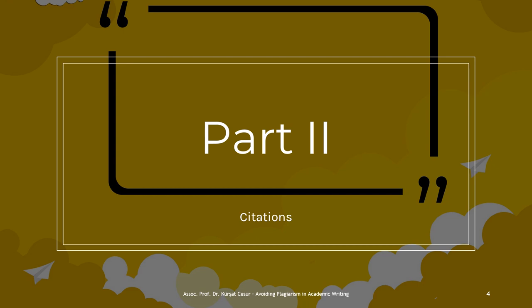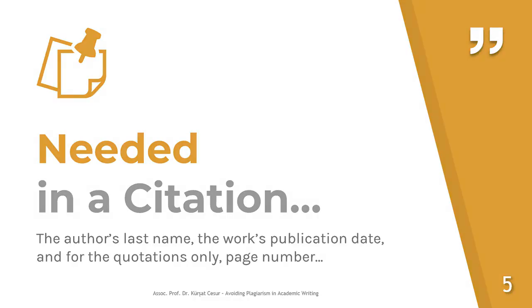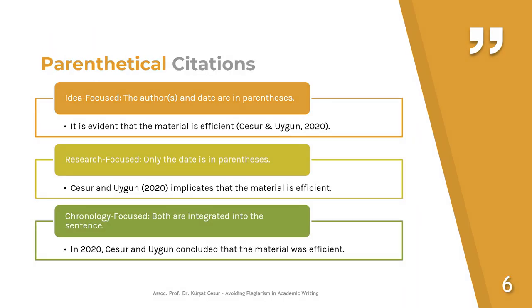Let's have a closer look at citations. What is needed in a citation? Three pieces of information are needed: the author's last name and the work's date of publication must always be present. The page number — which is required only in direct quotation — is the third piece of information needed. Let's see the samples of parenthetical citations.